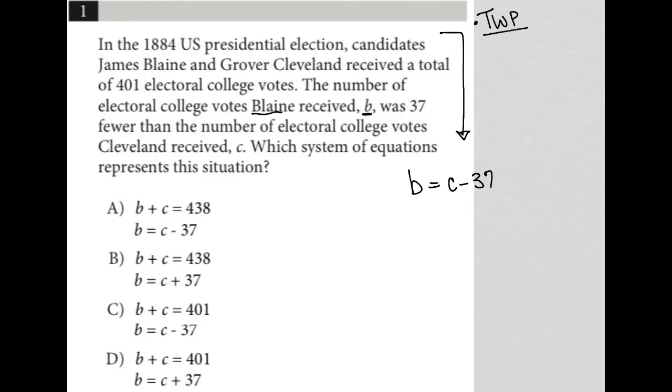Since B is represented by Blaine and C for Cleveland, our first sentence told us that the combination of electoral votes between the two of them was 401, which means B plus C is equal to 401.